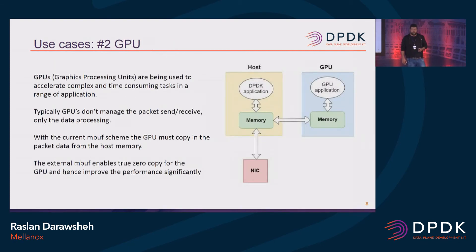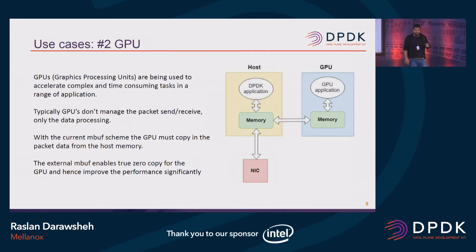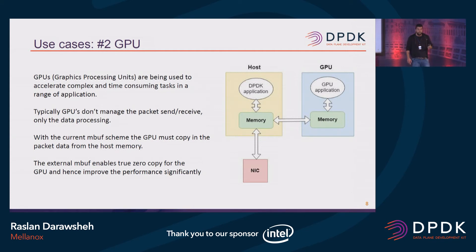The next sample usage is the GPU — graphic processing units. GPUs are mainly used for accelerating complex and time-consuming tasks. Typically, GPUs don't manage any packet sending or receiving — only the data processing itself. With the current implementation of the Mbuf, what the GPU has to do is copy all the data from host memory to GPU memory and vice versa in order to send and receive. The external Mbuf will enable zero packet copy from GPU memory to host memory and vice versa. The mempool on the host will just populate a list of Mbuf descriptors, attaching packets to the external buffer on the GPU.